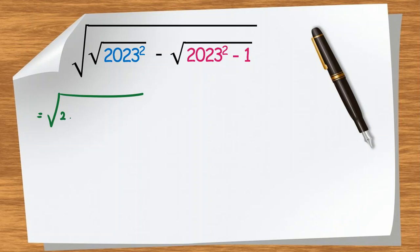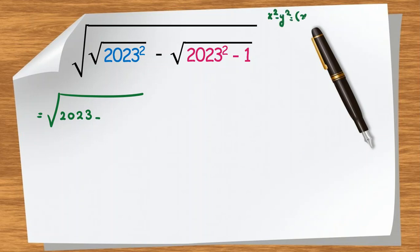We can write 2023 squared minus 1 as 2023 squared minus 1 squared, since 1 equals 1 squared. Now we apply the famous difference of squares identity: x squared minus y squared equals x minus y times x plus y.